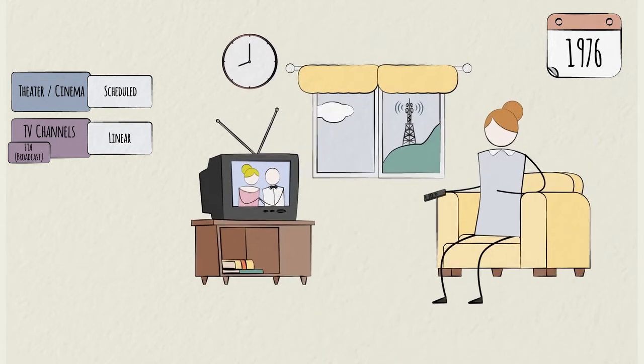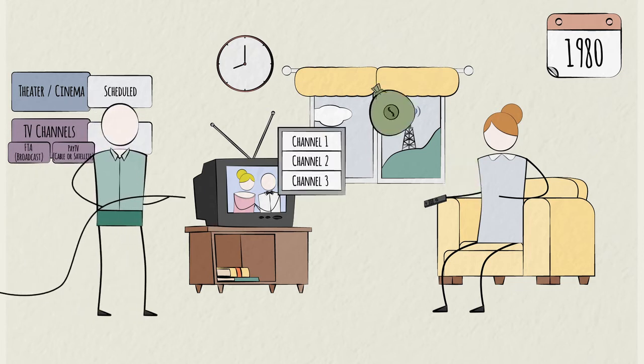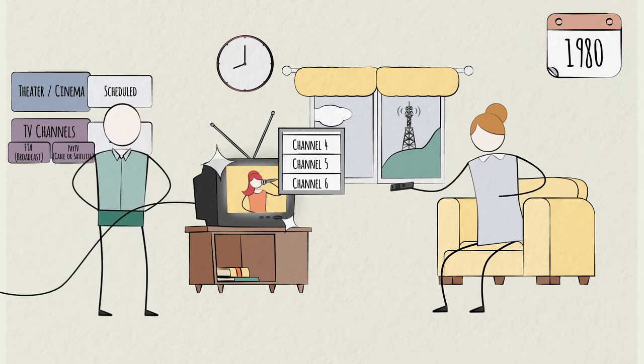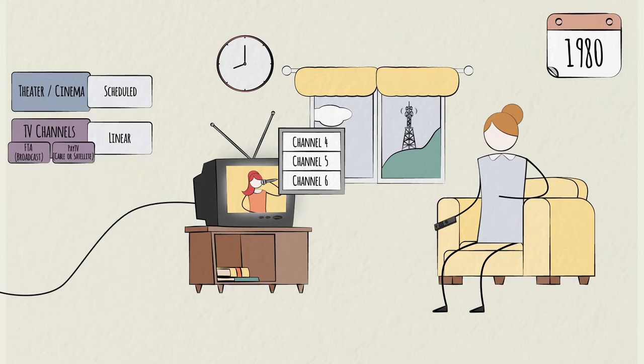It's 1980. You were bored of the broadcast programming, so you get pay TV. You pay a monthly fee to a cable provider, and now you have many more networks and channels to choose from. A few years later, you could choose a satellite provider instead.